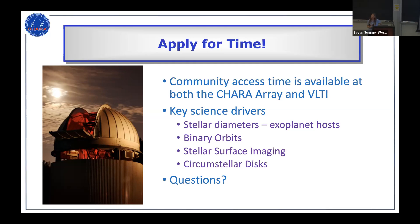Question about the Alpha Centauri A and B system: there were claims of planets around both components — is somebody at VLTI actually trying to confirm those by looking for wobble in the binary orbits? I don't know for sure if it's an accepted program, but I think there is either awarded time or somebody looking into that with VLTI. I don't know as much about the VLTI programs currently in progress.